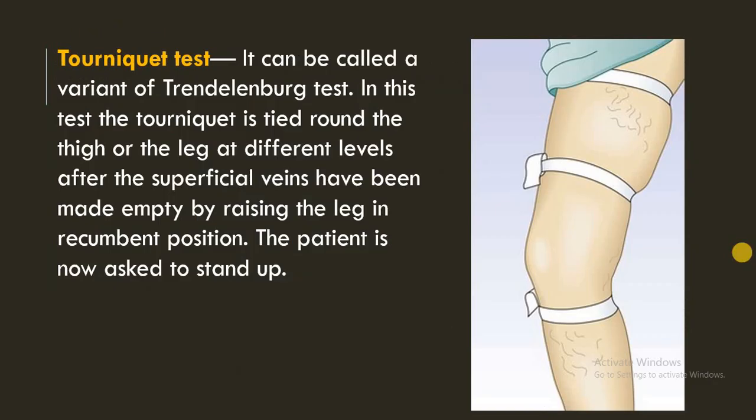Next is the tourniquet test, which can be considered a variant of the Trendelenburg test. In this test, the tourniquet is tied around the thigh or leg at different levels after the superficial veins have been emptied by raising the leg in the recumbent position. The patient is then asked to stand up. The level at which varicose vein dilatation or tortuosity reappears on standing indicates the area of venous incompetence.